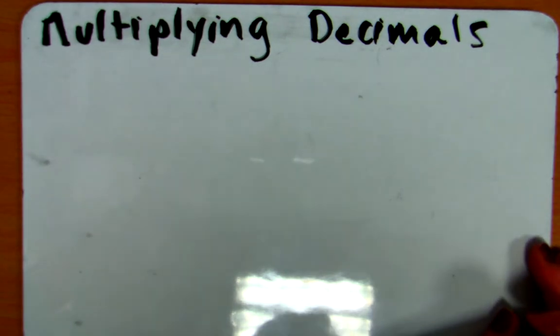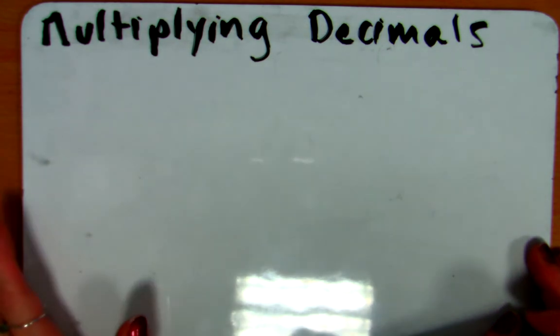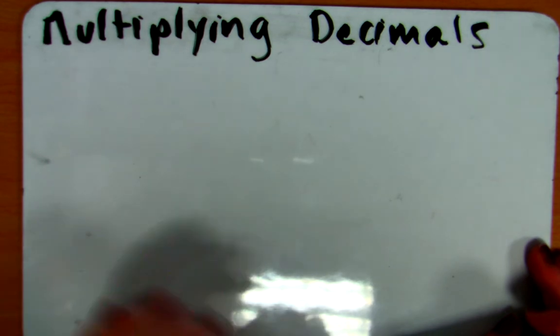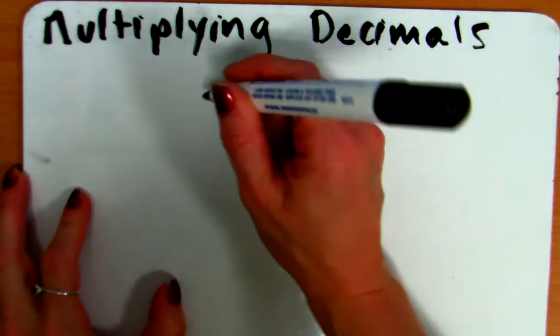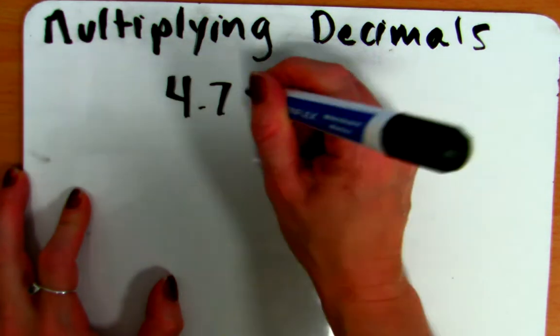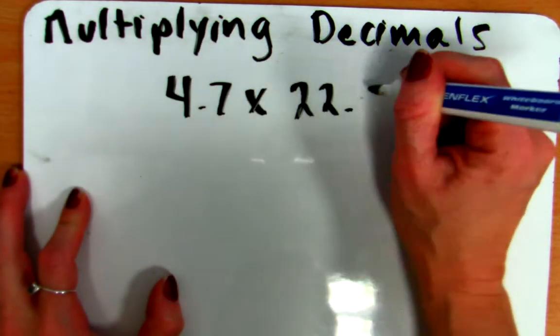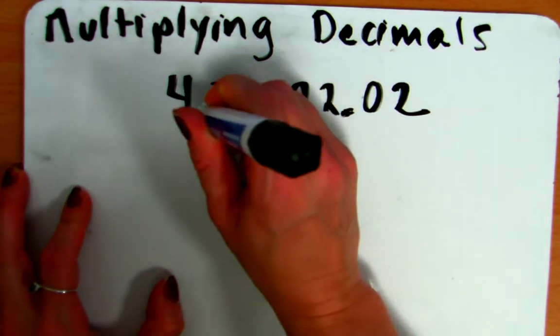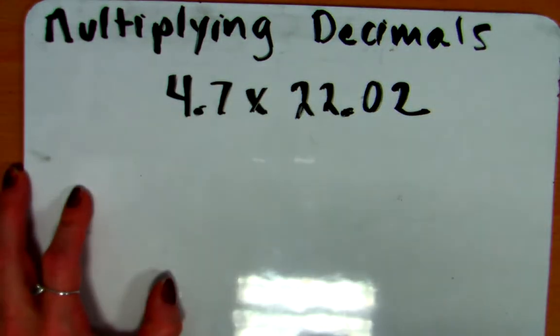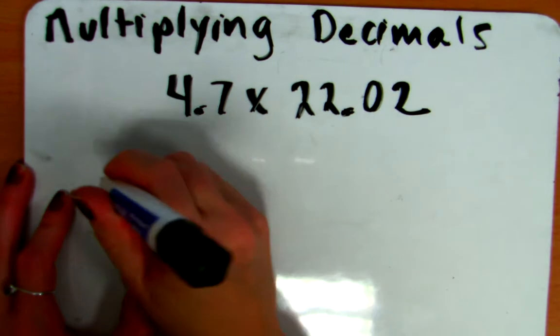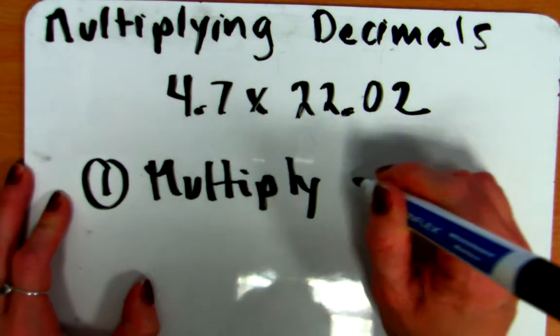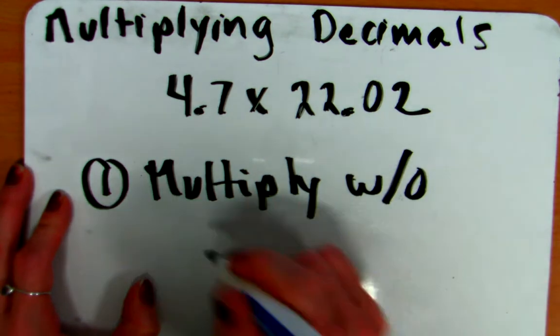We're going to talk about the different algorithms for multiplying decimals, which really is when it gets down to only one algorithm, but just a different way to look at the same algorithm. So, if we are multiplying two decimals, let's say we're multiplying 4.7 times 22.02. From the work that we have done in class and on different problems, we know that the first step for our algorithm is always to multiply without the decimal points.